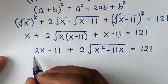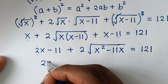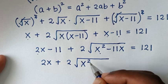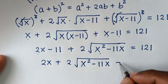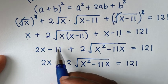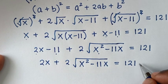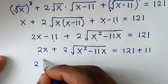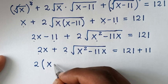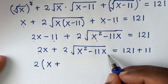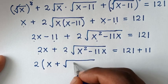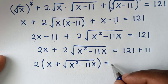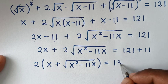In the next step, it becomes 2x plus 2 times the square root of x² minus 11x, equals 121. We move the minus 11 to the right side to get plus 11, giving 132. Then 2 is common on the left, so we factor it out: 2 times (x plus √(x² − 11x)) equals 132.